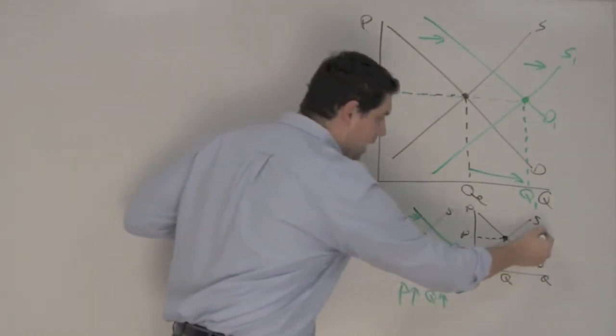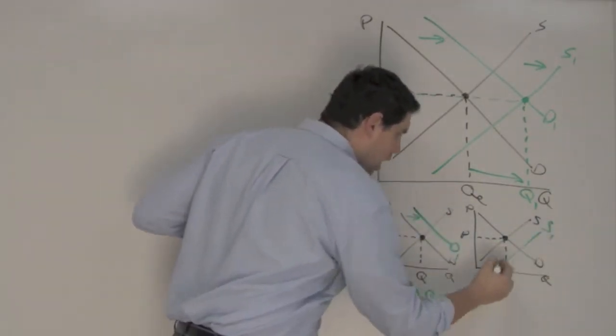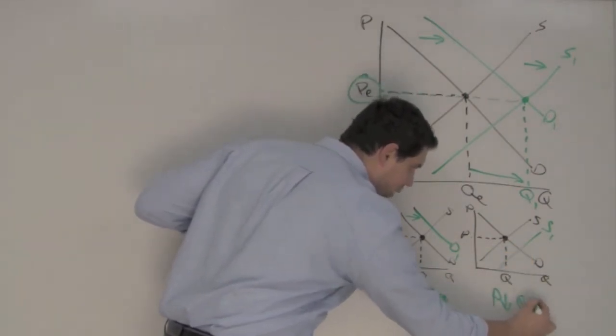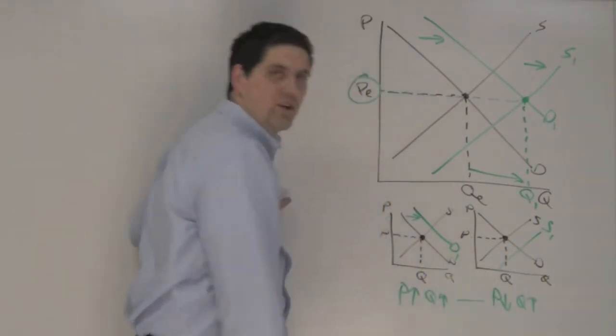And on this one, supply shifts to the right, which would cause price to go down and quantity to go up. And then combine those answers.